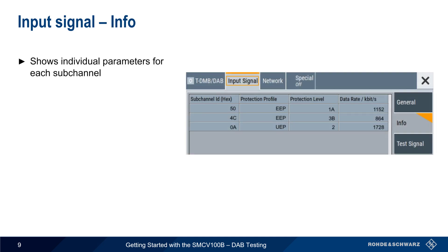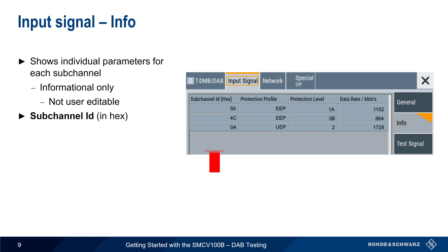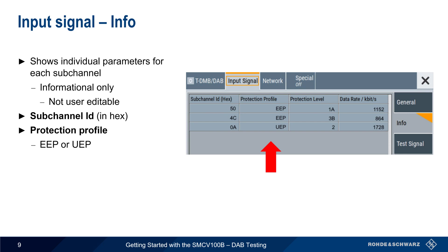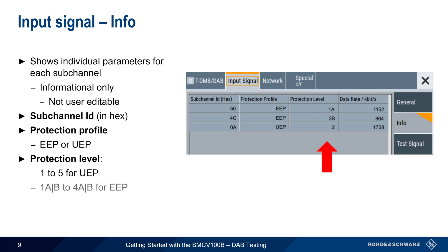The Input Signal Info tab shows the individual parameters for each sub-channel within the ETI source data. This display is informational only and the fields are not editable by the user. The displayed fields start with the sub-channel ID given in hex, followed by the protection profile used for each stream — either equal error protection or unequal error protection — the protection level (1 to 5 for UEP, and 1A or B through 4A or B for EEP), and the data rate for each sub-channel in kilobits per second.